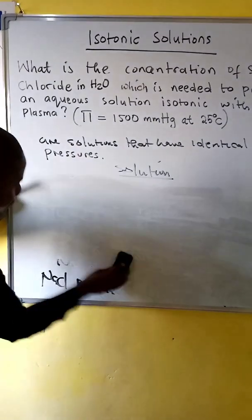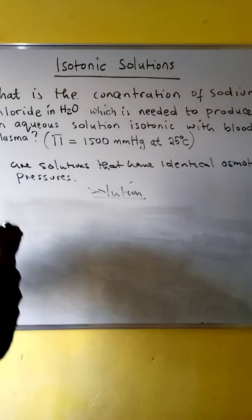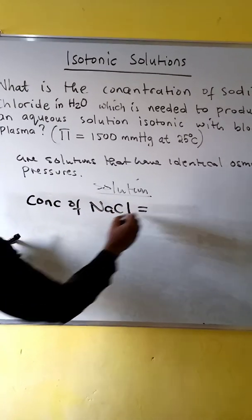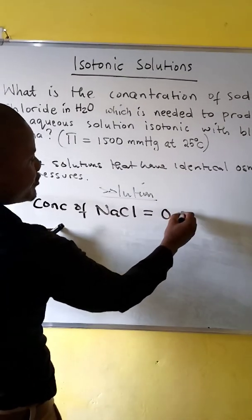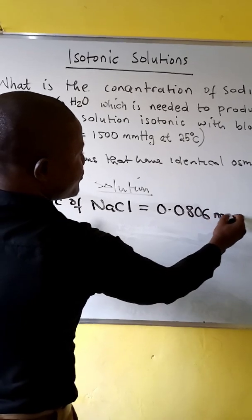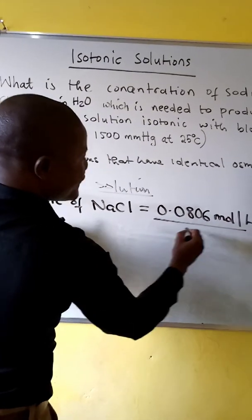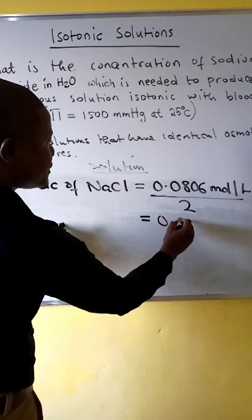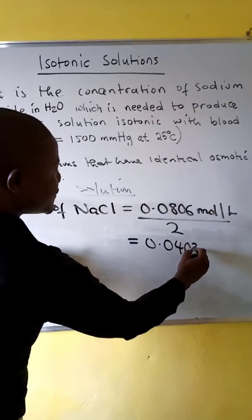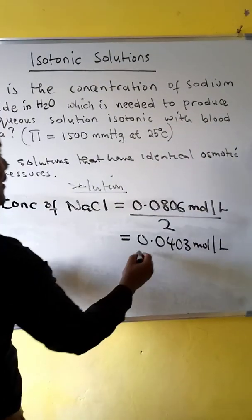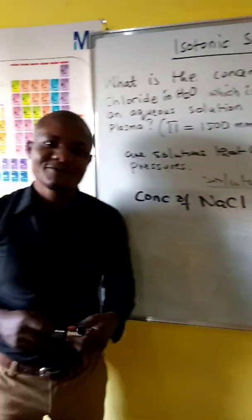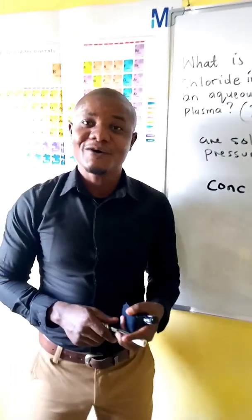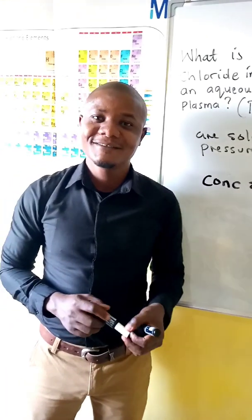Now we need to calculate the concentration of sodium chloride. The concentration of sodium chloride will be the total concentration — 0.0806 moles per liter — divided by two, which comes from the sodium chloride ions. When we divide, we get 0.0403 moles per liter. So this is the concentration of sodium chloride which is needed. Thanks for watching. In the next tutorial we'll look at Henry's law. Don't forget to subscribe to my channel. Thank you, bye.